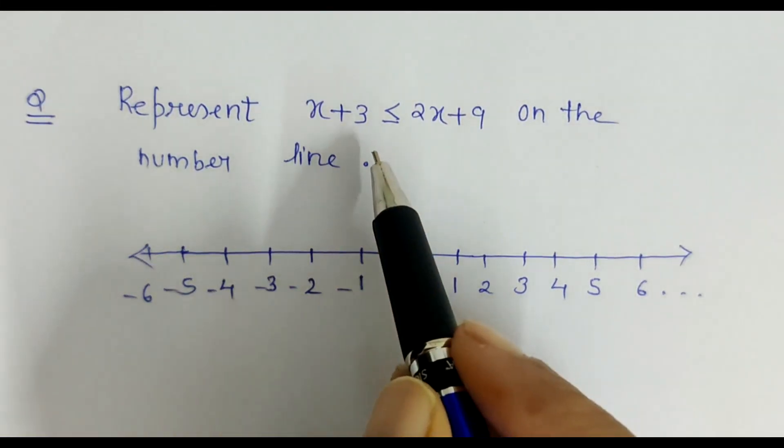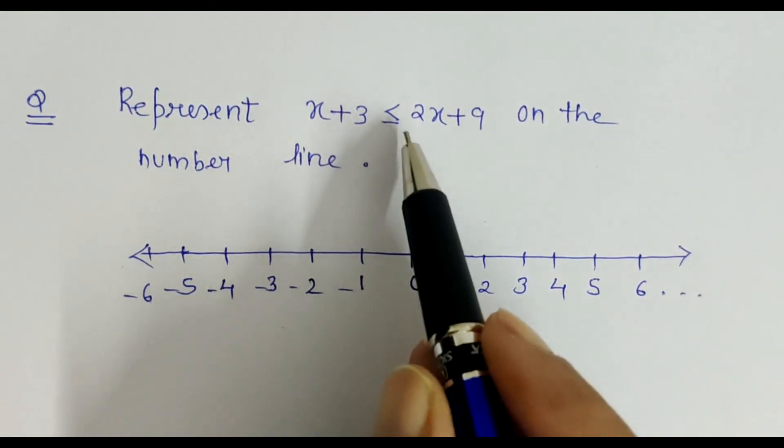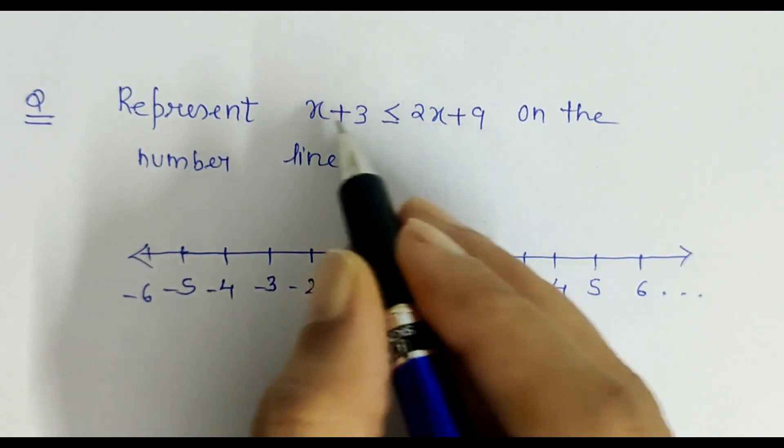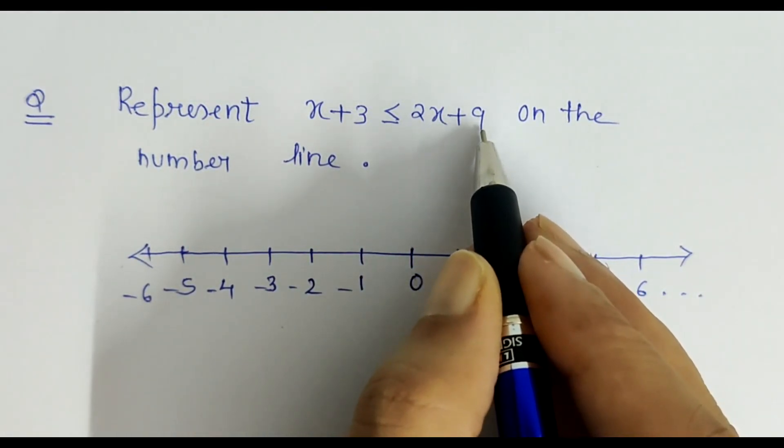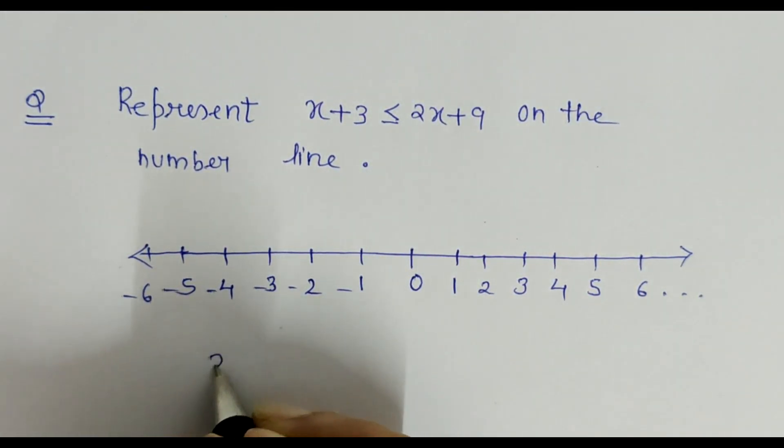Friends, in this question again we have to bring the like terms together. So I'll shift this x towards 2x and the constant term towards the constant term. So 3 and this 9, when shifted on left hand side, becomes minus 9 less than equal to...